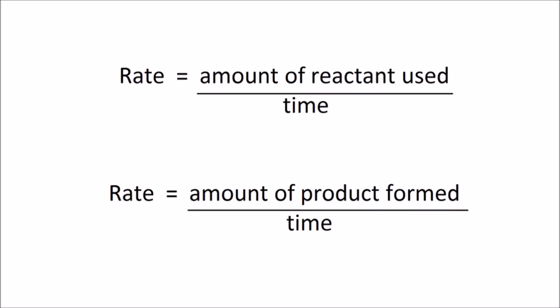Either how quickly the products are made or how quickly the reactants are used up. So here the top equation gives us the rate as being the amount of reactant used divided by the time taken, and this bottom equation gives the rate as the amount of product formed divided by the time taken. So we need to be able to measure the amount of either the reactant used or the amount of the product formed, and we need to time the reaction in order to find the rate.